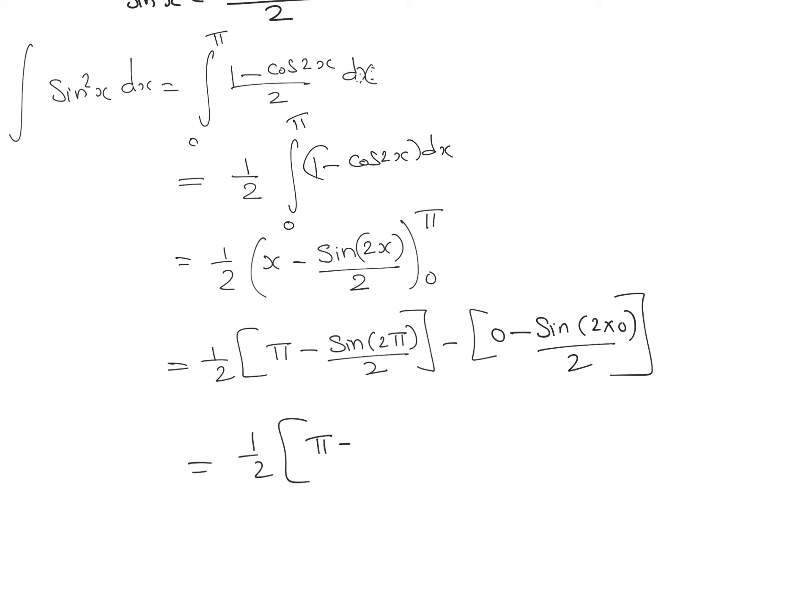We can write this as π minus 0, then subtract the lower limit: 0 minus sin 0, which is also equal to 0. Therefore, the answer equals π divided by 2.